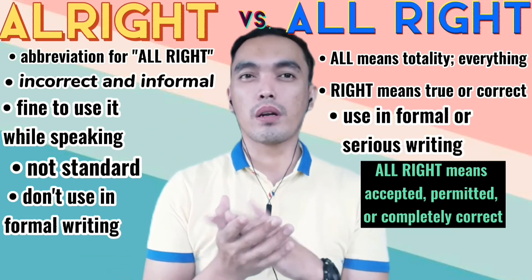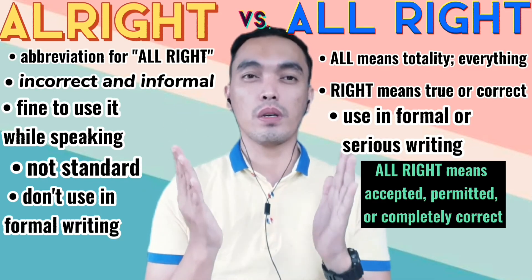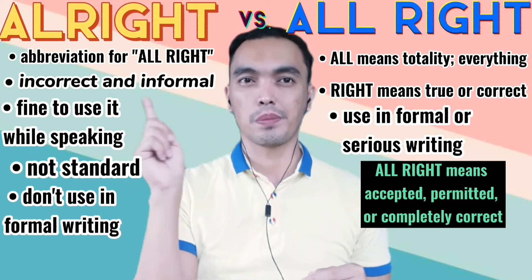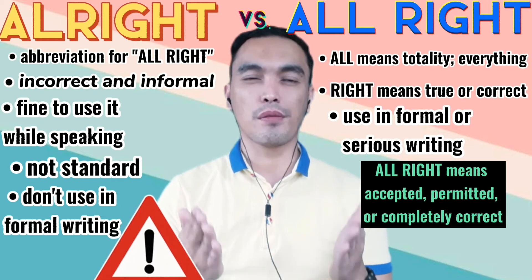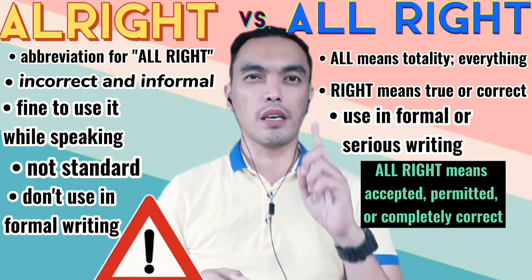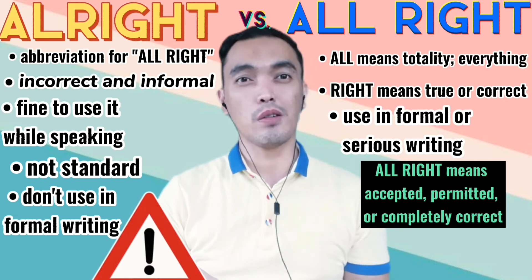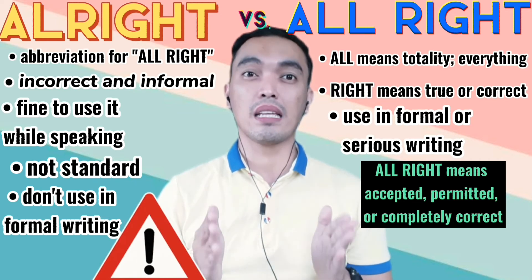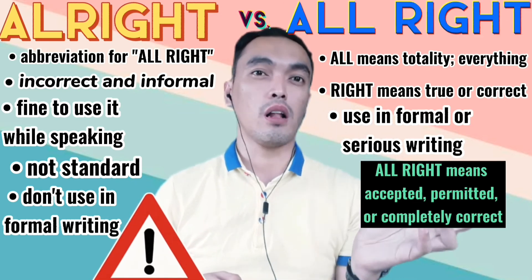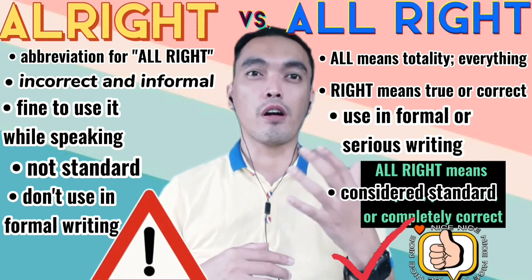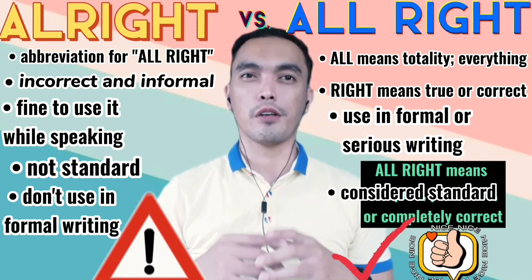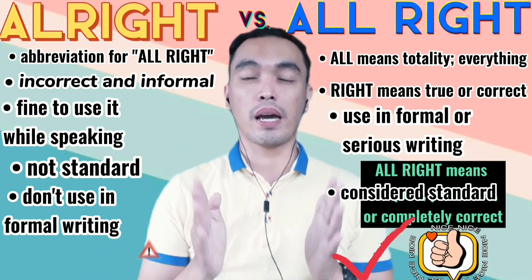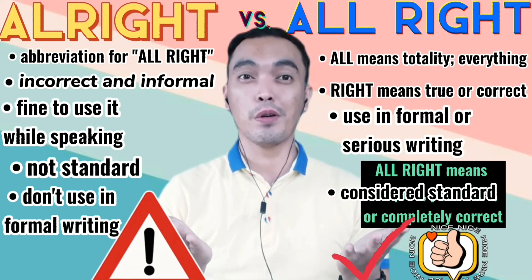Let's have a quick review to make sure we have learned what we've learned. 'Alright' written as one word is informal — not for formal writing — but if you use it in dialogue, you can. If you want to use it formally, it is best to spell it as two words: 'all right.' For all types of writing, 'all right' is completely correct. There is nothing wrong — no complaints.